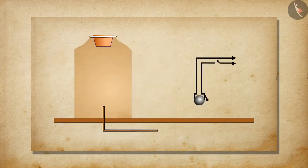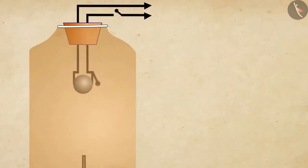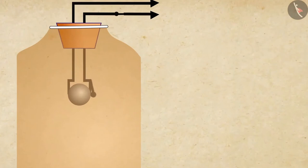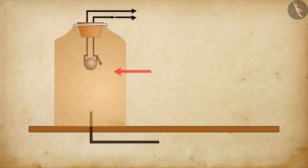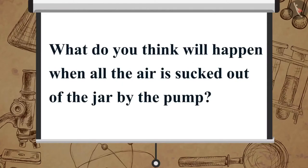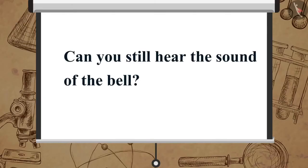Suspend the electric bell inside the bell jar. Then press the switch and you will be able to hear the sound of the bell. Now start the vacuum pump. You will notice that the sound of the bell gradually becomes fainter. What do you think will happen when all the air is sucked out of the jar? Can you still hear the sound of the bell?